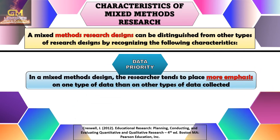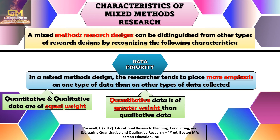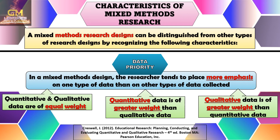Next is data priority. In a mixed methods design, the researcher tends to place more emphasis on one type of data than on others. Data priority may take the form of any of the following: first, when quantitative and qualitative data are of equal weight; or when the quantitative data is of greater weight than the qualitative data. The data priority in each mixed methods design differs depending on the objectives of the research and the research design being used.